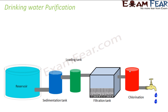Let's see how drinking water is purified. Whatever water we get in the city is purified by the government through a full process. The impure water from a reservoir is first put into a sedimentation tank, where it is allowed to settle for two to three hours. Solid particles settle down to the bottom — this is the sedimentation process.